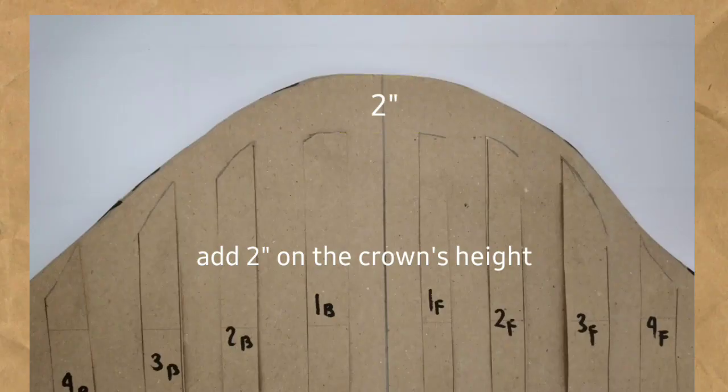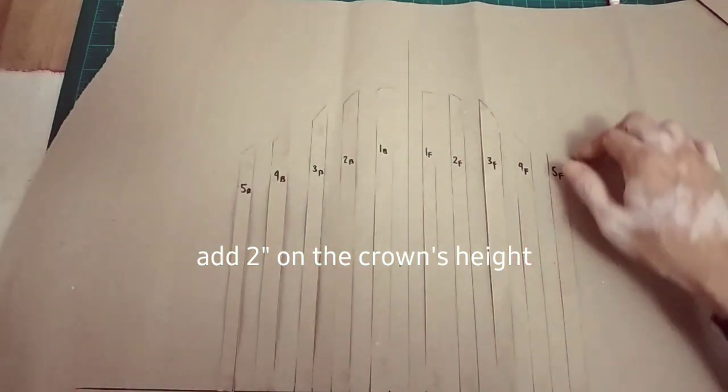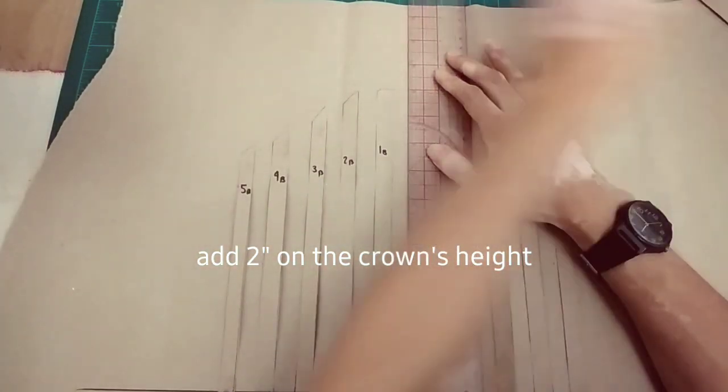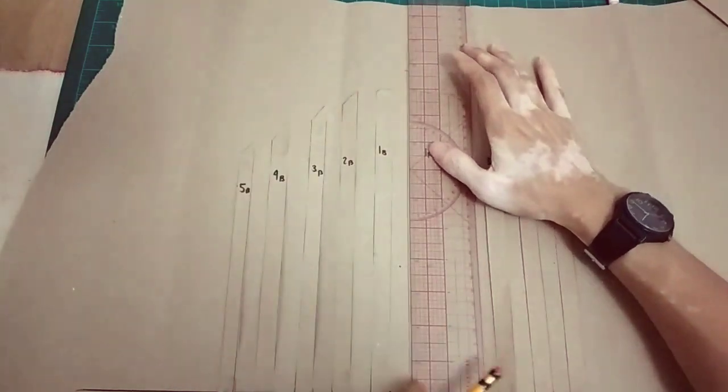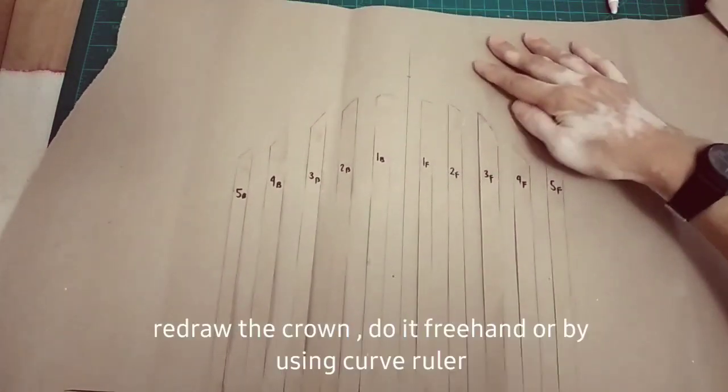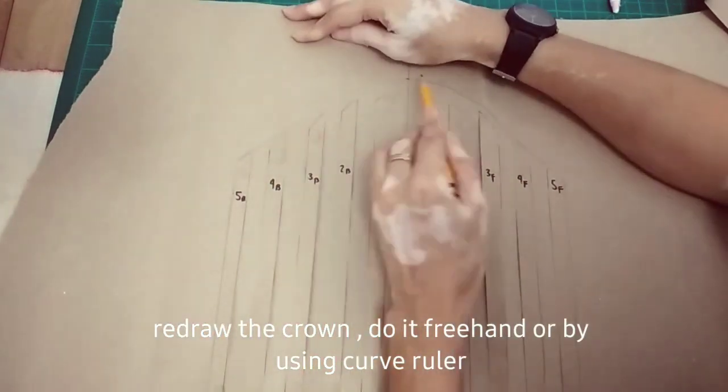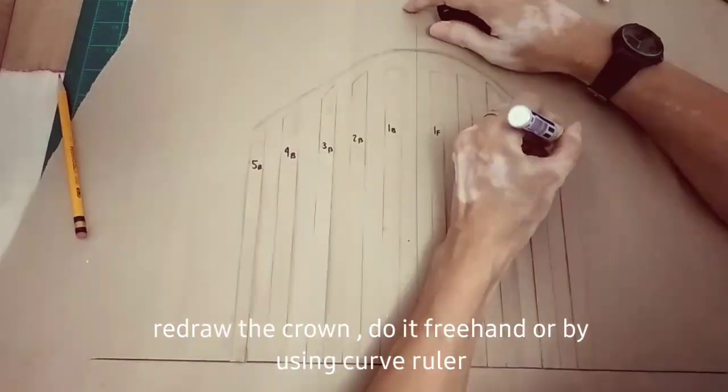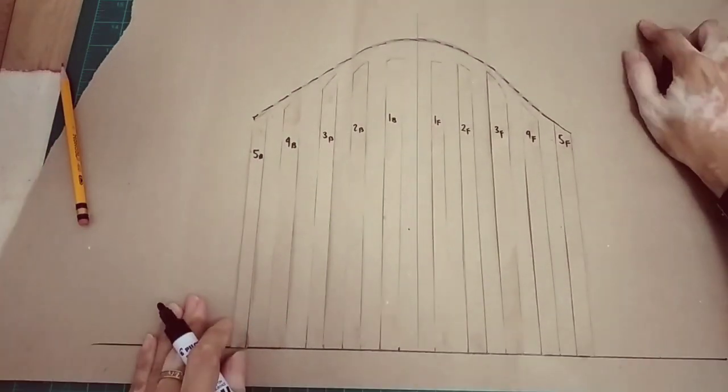Add 2 inches from the old crown going upward, so an additional 2 inches. After marking the 2 inches, you can do it by freehand or use a curve ruler to redraw the crown.